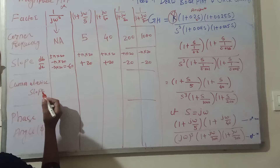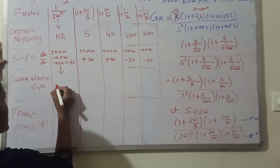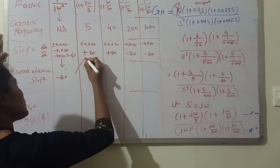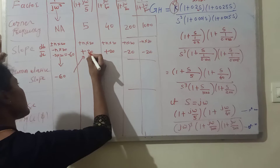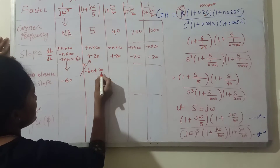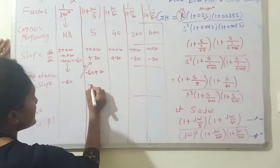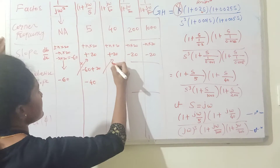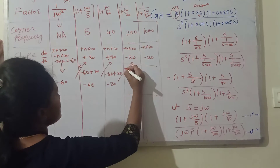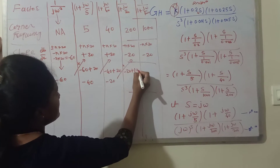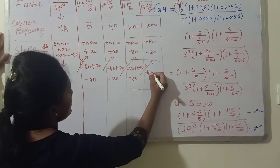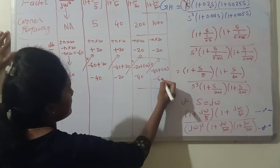For cumulative slope: the first cumulative slope equals the first slope, which is −60. The second cumulative slope is −60 + 20 = −40. Third: −40 + 20 = −20. Fourth: −20 + (−20) = −40. Fifth: −40 + (−20) = −60. In this way we get the cumulative slopes for all factors.